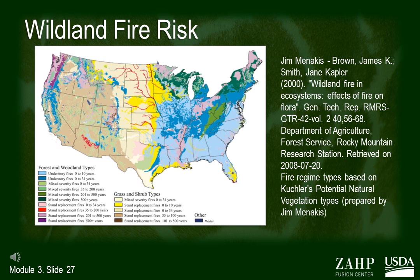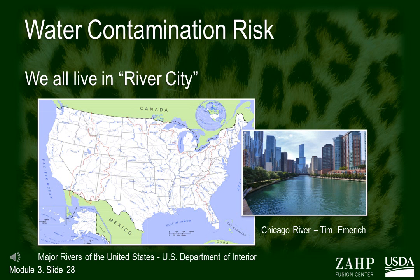What surrounds your facility? What's upstream? What's upwind? Evaluation of more distant risks is prudent for many types of events. Risks should also be considered in relationship to meteorological and hydrological dynamics. A severe oil spill 50 miles downstream from your facility is far less concerning than one 150 miles upstream.